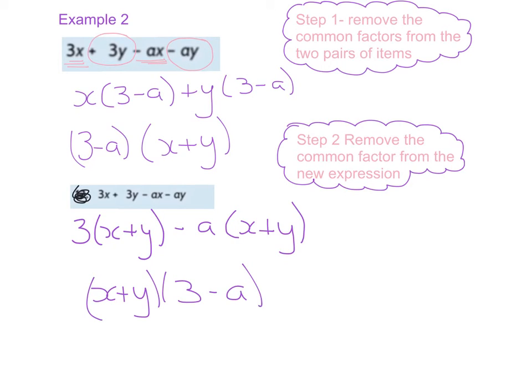And so you can see here that we all have different brains that will look and see something common straight away. Some of you will have looked and seen the 3 common both here straight away and taken out the 3 and other students would look and spot the x and take that out. But you can see here that our answers are the exact same. Different order but the exact same.